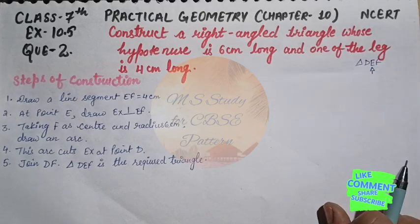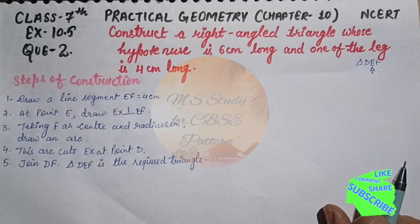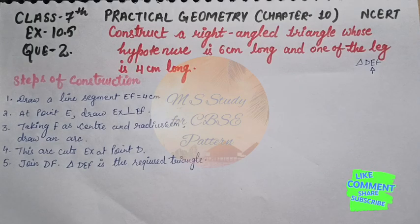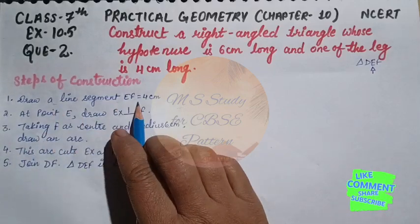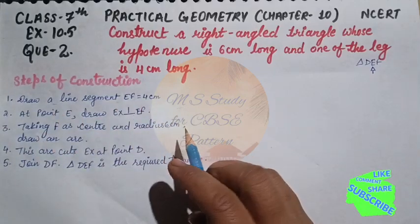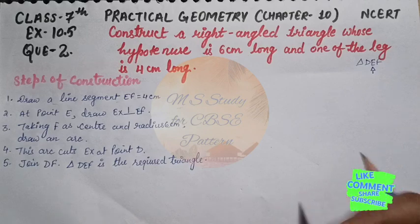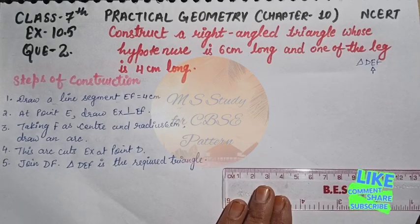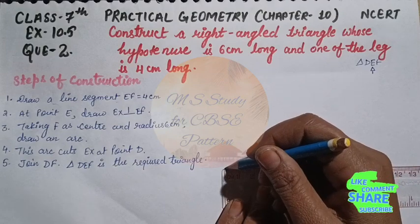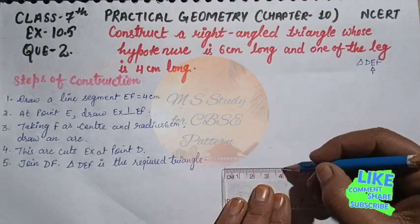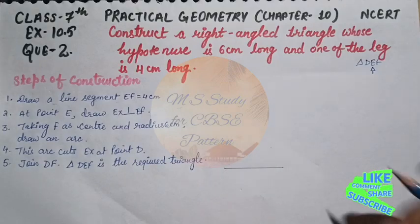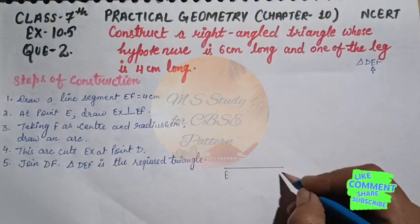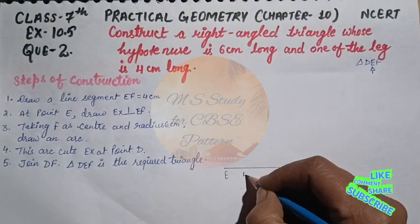Here we start our construction. First step is draw a line segment EF, 4 centimeters. What you have to do is take a scale from 0 to 4 and draw a straight line. This line is named EF, 4 centimeters.